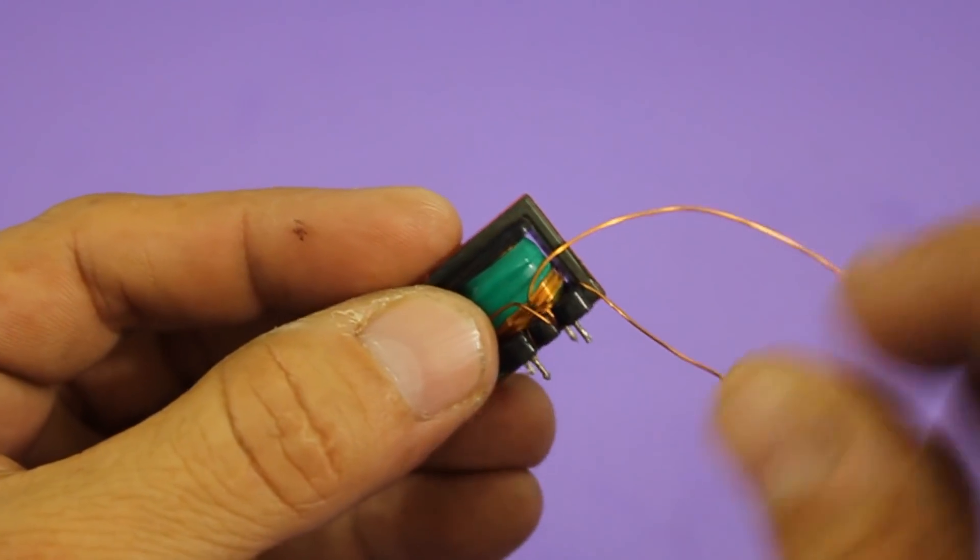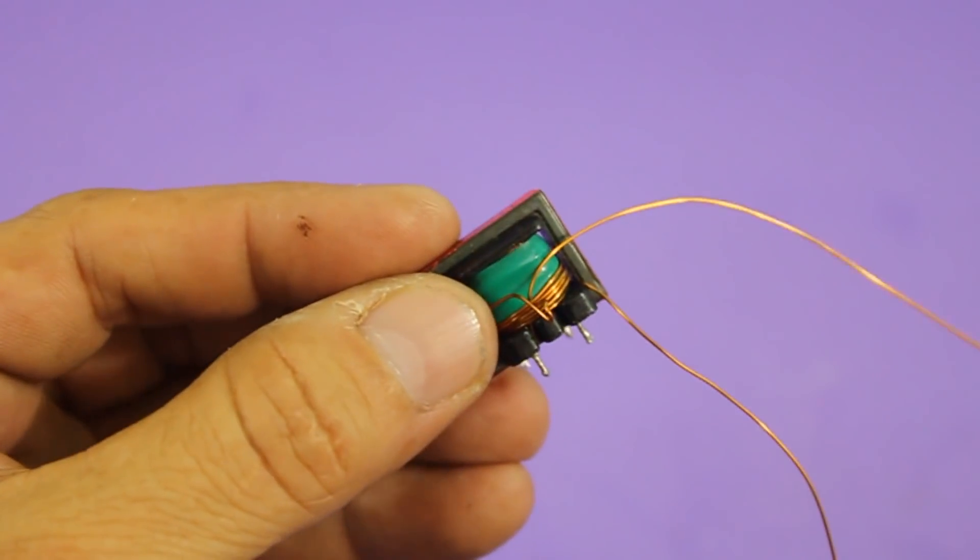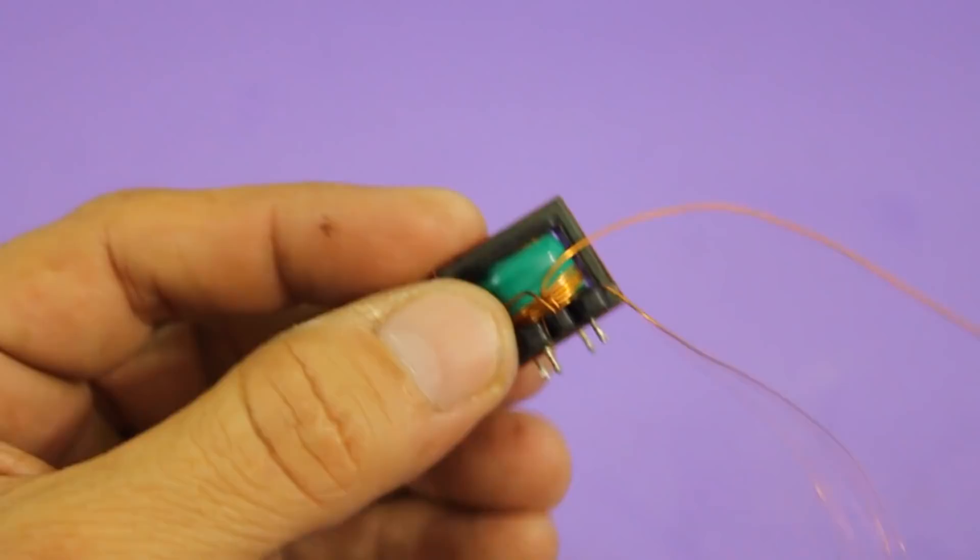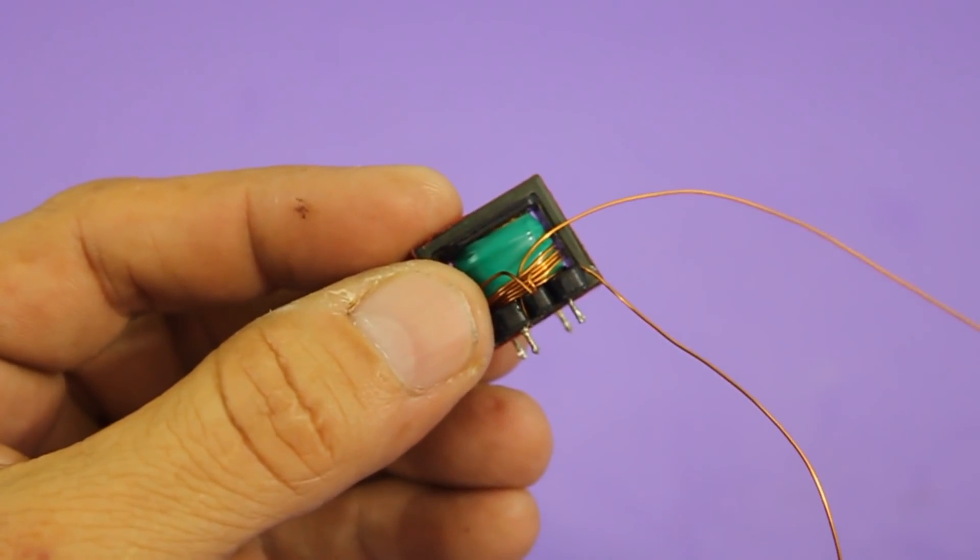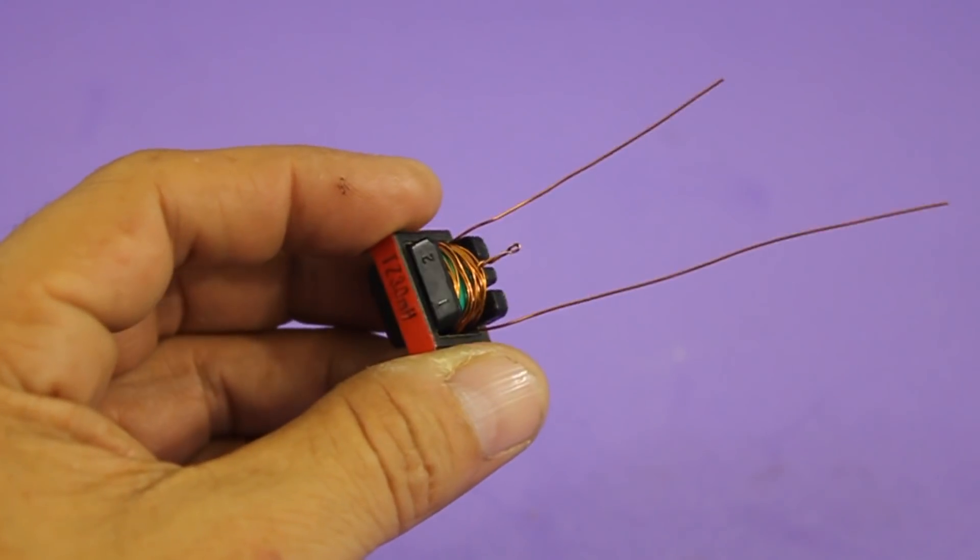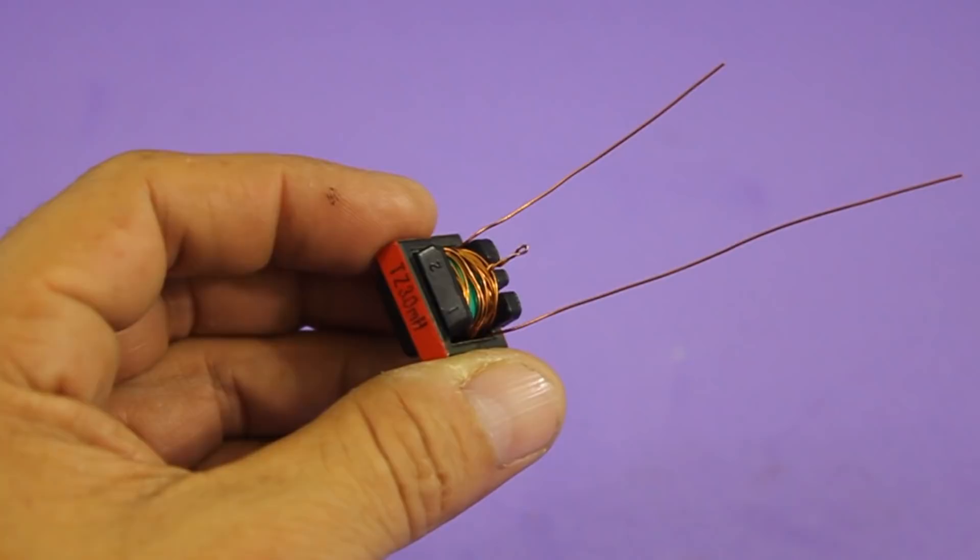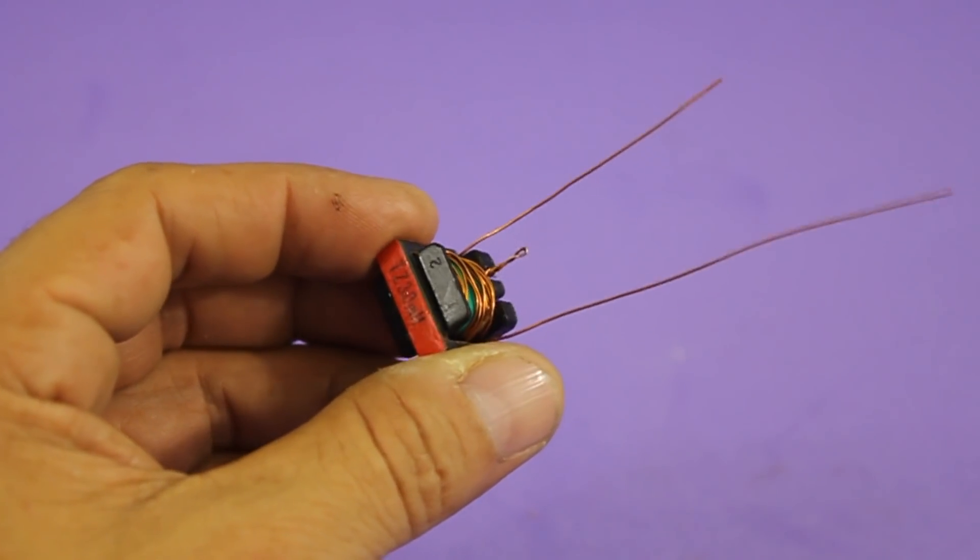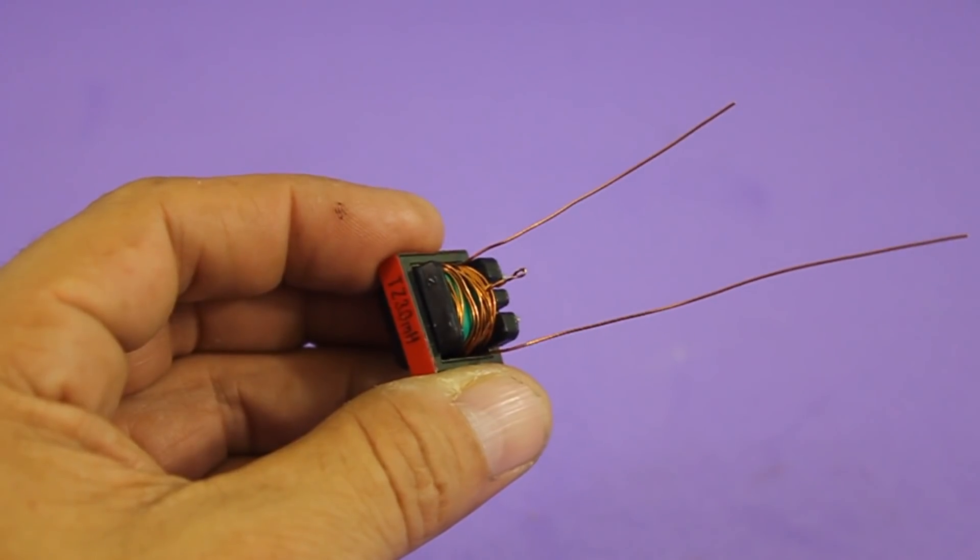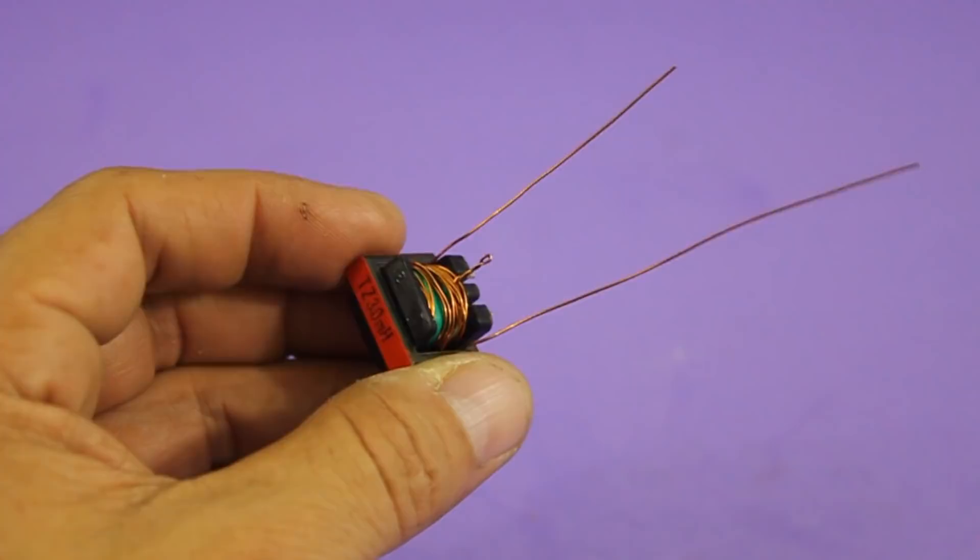The exact number of turns depends on the particular inductor, so you have to make some tests in order to find the number of turns that will give you the higher output voltage. The transformer is finished. I used six plus ten turns. It is important to identify the wires. In my case, the short wire corresponds to the six turns and the longer one corresponds to the ten turns.